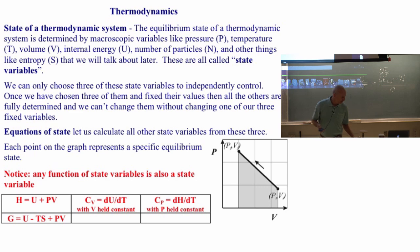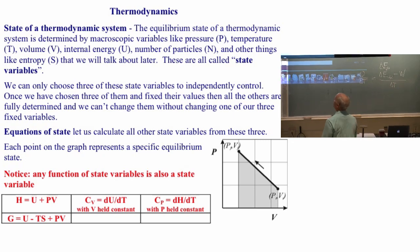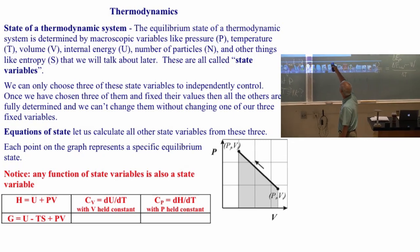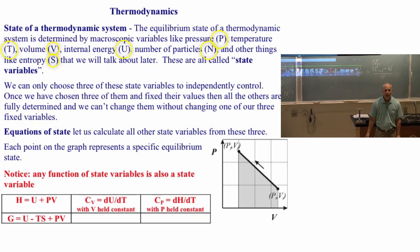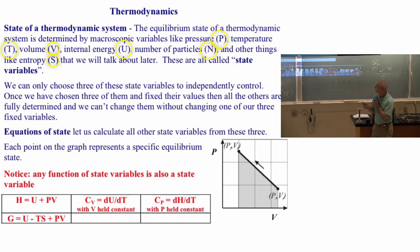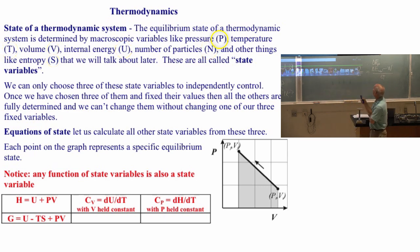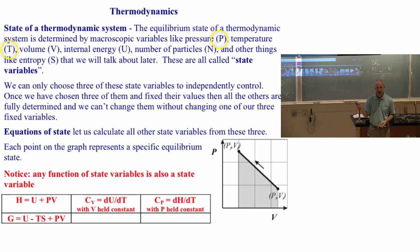This is a fast slide — I don't really expect you to make too much of it. There are a bunch of variables called state variables that define the equilibrium state of a system. For example, the gas in this room: I can tell you things about it. I can measure the pressure of the gas, approximately one atmosphere, and the temperature, approximately 300 Kelvin.